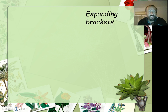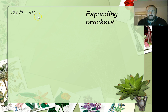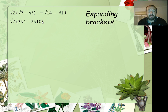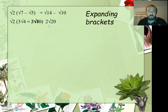Expanding brackets with surds — we've got to remember the FOIL method when we do this. So for the first example, to expand the bracket we go root 2 times root 7, and root 2 times negative root 5. This equals root 14 take root 10: root 2 times root 7 gives root 14, and root 2 times minus root 5 gives minus root 10. For the next one: 3 root 2 times root 4 gives us root 8, so it's 3 lots of root 8, and root 2 times 2 root 10 gives us minus 2 root 20.